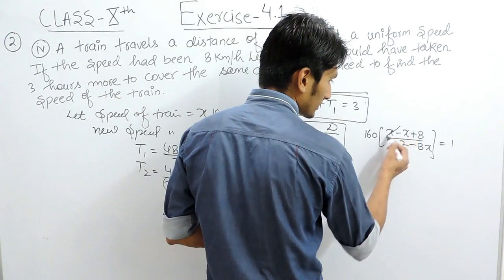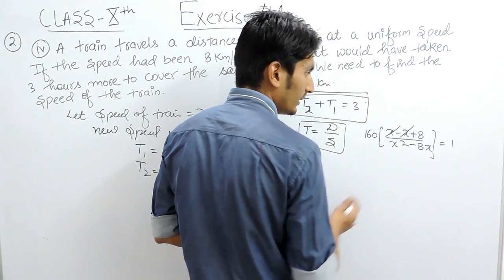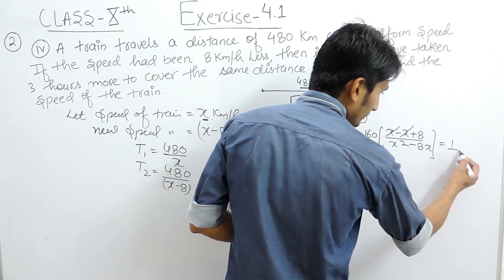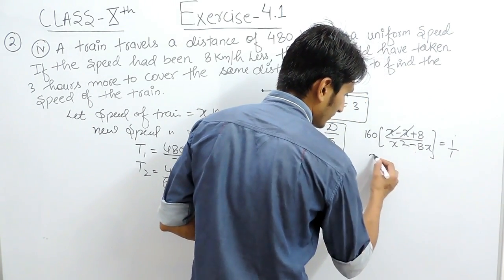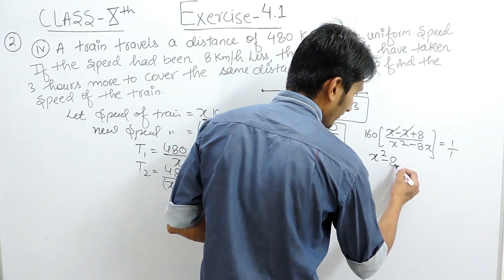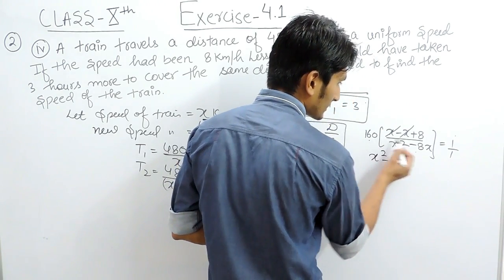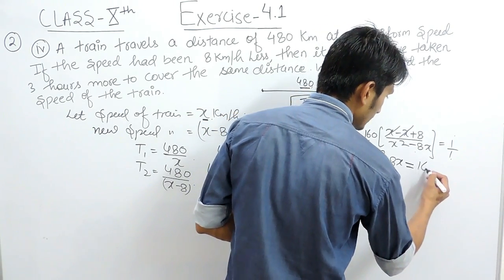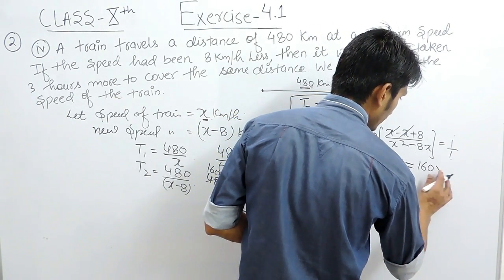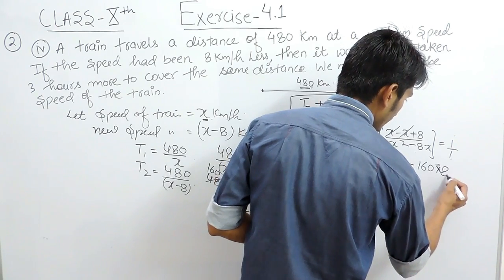Now this positive and this negative can be cancelled out. Cross multiplying, this term must be multiplied by this, so this will remain as it is. But 160 multiplied by 8, when multiplied by 1, will be 160 into 8.